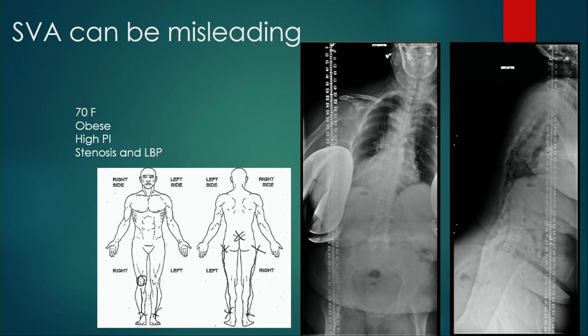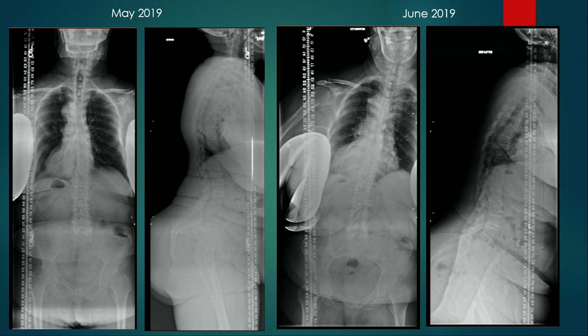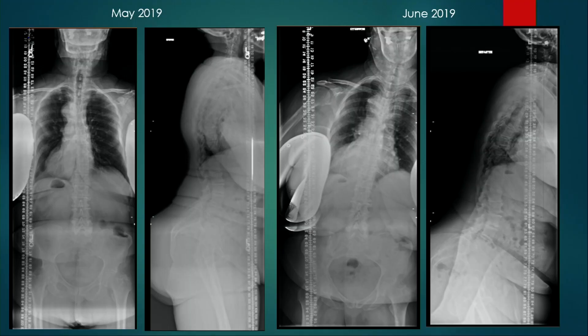SVA can be very misleading. A patient who presented in May had some degree of sagittal malalignment, but an x-ray just a month later showed she was far more positively sagittally aligned — a result of her stenosis becoming more symptomatic. We have to think through whether a patient is presenting with a positive SVA because of stenosis symptoms and the desire to lean forward to relieve those symptoms.